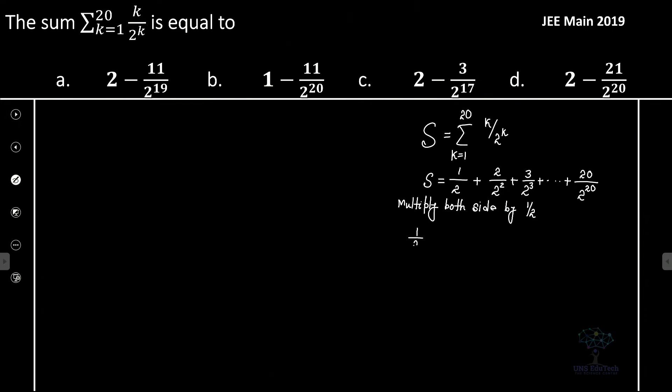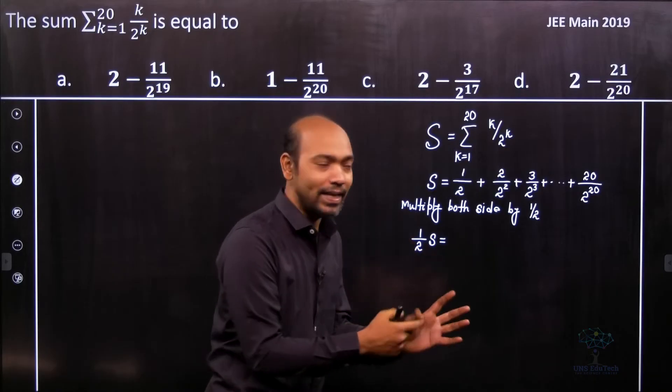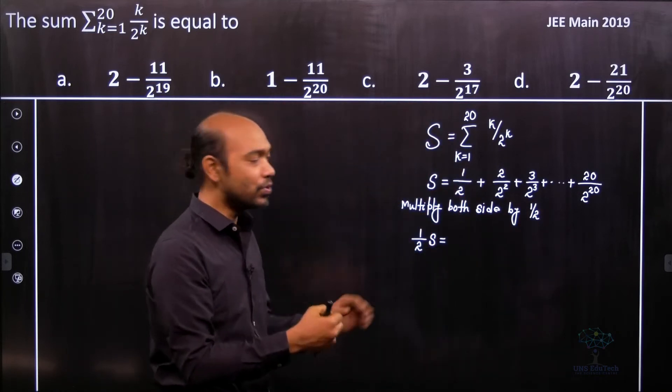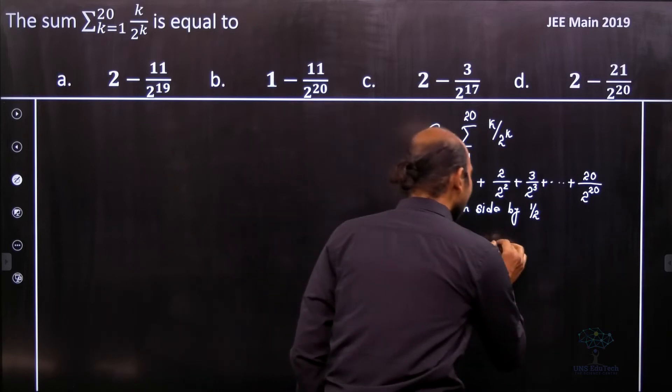In the left hand side it's 1 by 2 s. Now whenever we write the same series I'll use a shift. So 1 by 2 is 1 by 2 squared. So I'll write down in the next term or the second term.